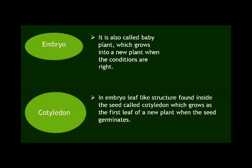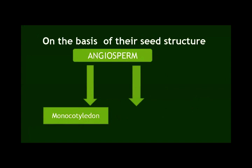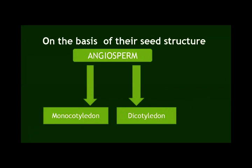We are going to talk about the two main groups of angiosperms — flowering plants — on the basis of seed structure. They are monocotyledon and dicotyledon. Mono means one, di means two, and cotyledon means seed leaves. In the angiosperm group, if a plant seed has one seed leaf, it is called monocotyledon. If the plant has two seed leaves, it is called dicotyledon.